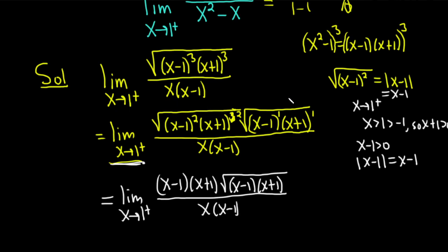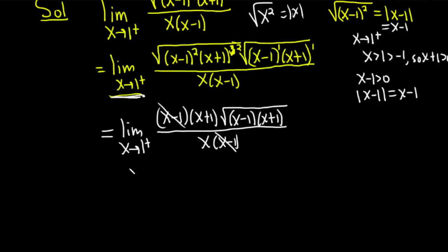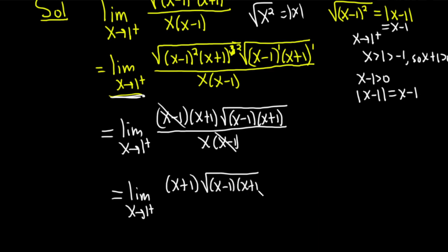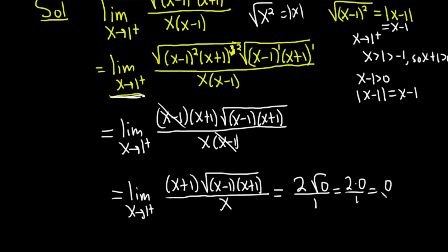It's really a delicate thing — if you take the square root of x squared, that equals the absolute value of x. Finally, the x minus 1 terms cancel. So this equals the limit as x approaches 1 from the right of x plus 1 times the square root of x minus 1 times x plus 1, all divided by x. Now we can plug in 1: we get 1 plus 1, which is 2, and 1 minus 1 is 0, so the square root of 0 is 0. We get 2 times 0 over 1, which is 0 over 1, so the final answer is 0.